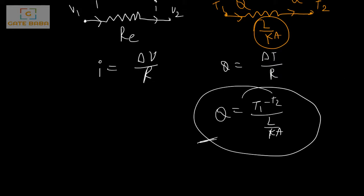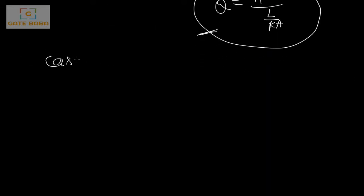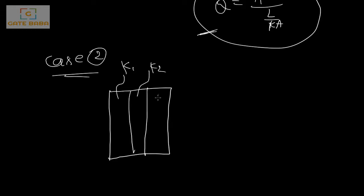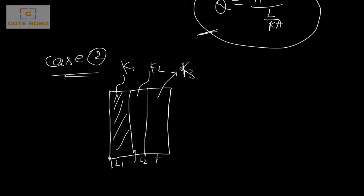Case 2 is a composite slab having multiple layers. For each layer there is a different thermal conductivity: K1 for the first layer, K2 for the second, and K3 for the third. For a given layer the thermal conductivity is constant, but it differs between layers. The thicknesses are L1, L2, and L3 respectively.